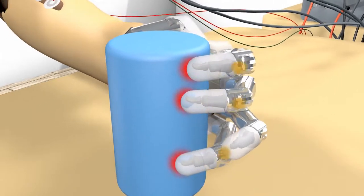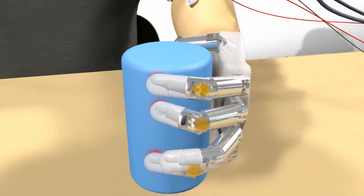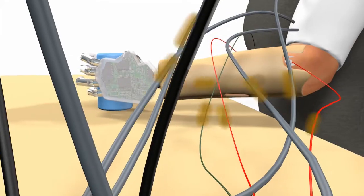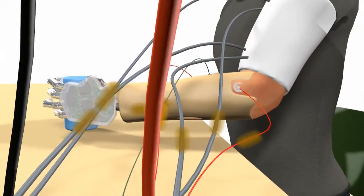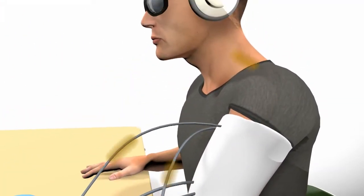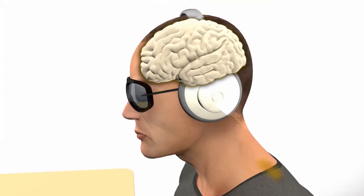Electrodes have been implanted in the median and ulnar nerves of the left arm. To feel an object that is in contact with the prosthetic hand, the electrodes deliver electrical stimuli to the nerves that were proportional to the finger sensor readouts.